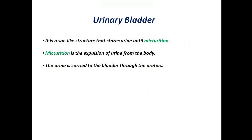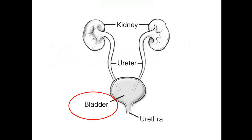The urinary bladder is a sac-like structure that stores urine until micturition. Micturition is the expulsion of urine from the body. The urine is carried to the bladder through the ureters. Here the red circle indicates the urinary bladder.